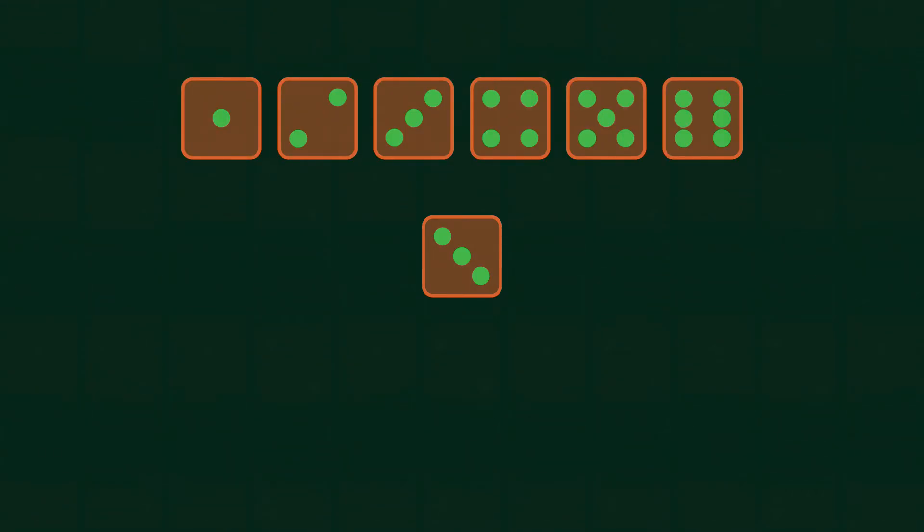Consider a standard dice. When rolled once, the sample space for this would be 1, 2, 3, 4, 5 and 6. Any of these outcomes are possible.